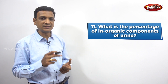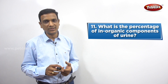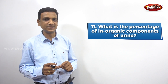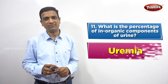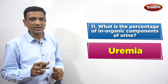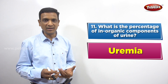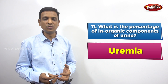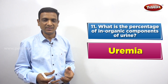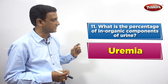In that remaining 4%, what is the percentage of inorganic constituents? It is 1.5%. So 96% is water, 2.5% is organic constituents, and 1.5% is inorganic constituents. The organic constituents include small amounts of glucose and vitamins. The inorganic part includes sulfates, phosphates, and these kinds of inorganic salts — making up 1.5% of urine.